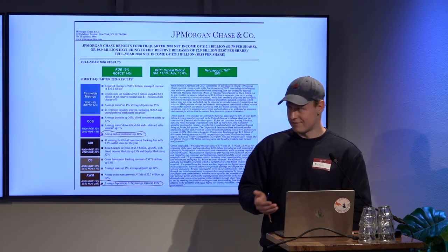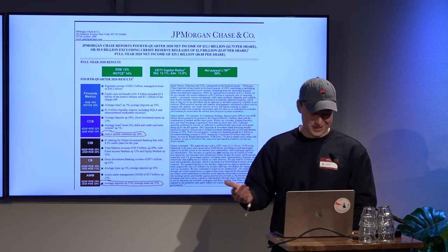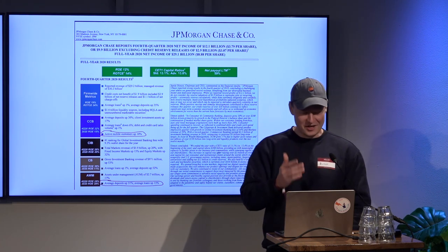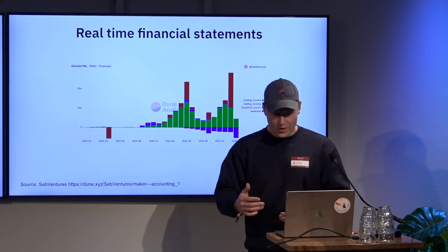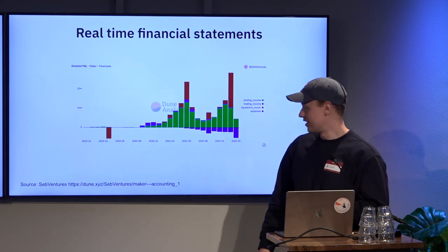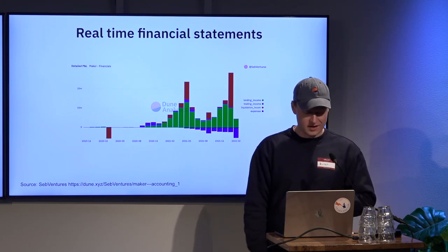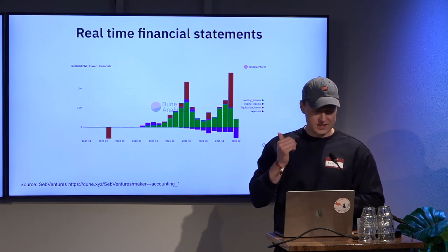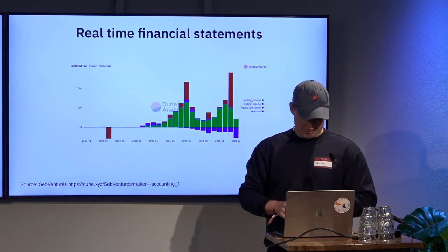Instead of getting quarterly reports every three months in some PDF where we don't even know what's going on, we now have real-time financial statements on Dune or any other Web3 data website. This is from MakerDAO — basically their profit and loss statement for the last year.